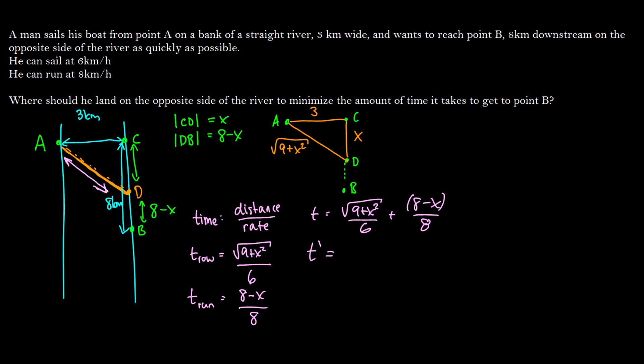So after this, and after a bunch of simplification, we're going to end up with X divided by 6 times the square root of X squared plus 9 minus 1 eighth. So we need to solve this for 0.